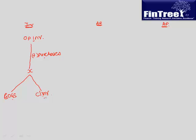We have four variables here. If you have any three, you can find the fourth. For example: opening inventory is 10, closing inventory is 15, and COGS is 5 — what are the purchases? The answer is 10. Because 15 plus 5 means X was 20, and since opening was 10, purchases must be 10. Just remember the flowchart sequence.